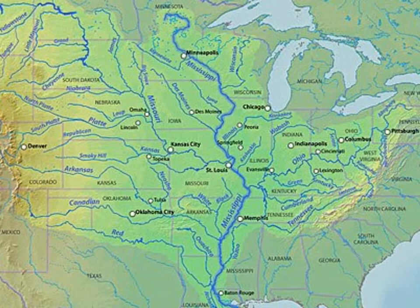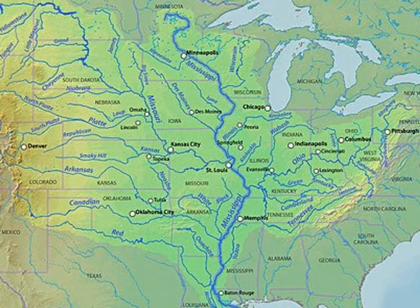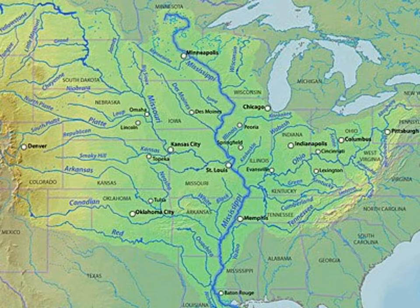A river of this size, with this much impact across so many states, requires a lot of management, particularly when the river is prone to flooding. When it flooded in 2011, 25,000 people had to be evacuated and property damage cost an estimated $3 billion.